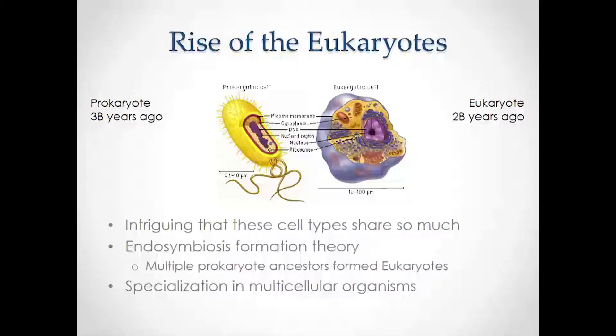At some point, about a billion years later, came the eukaryotes. They share so much in common — it's really intriguing, looking at it from a point of view of information and structure, to see how much they have in common. There are differences: some primary ones are the scale, 10 to 100 times larger, the nucleus, and other specialized functions. I prefer the endosymbiotic formation theory, that these prokaryotic cells, forming close association with each other, somehow became symbiotic, forming tighter relationships so that the whole is greater than the sum of the parts.